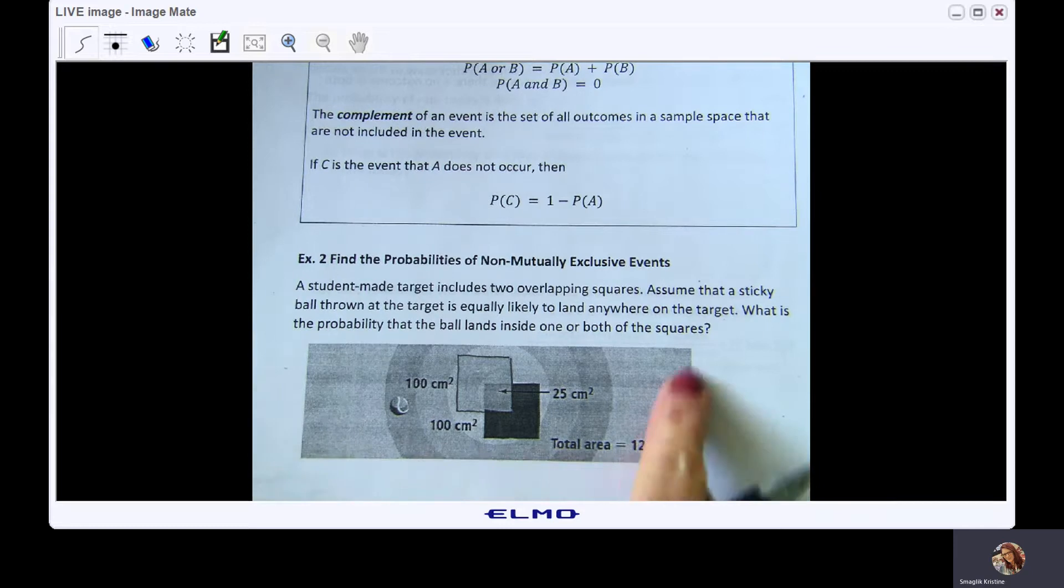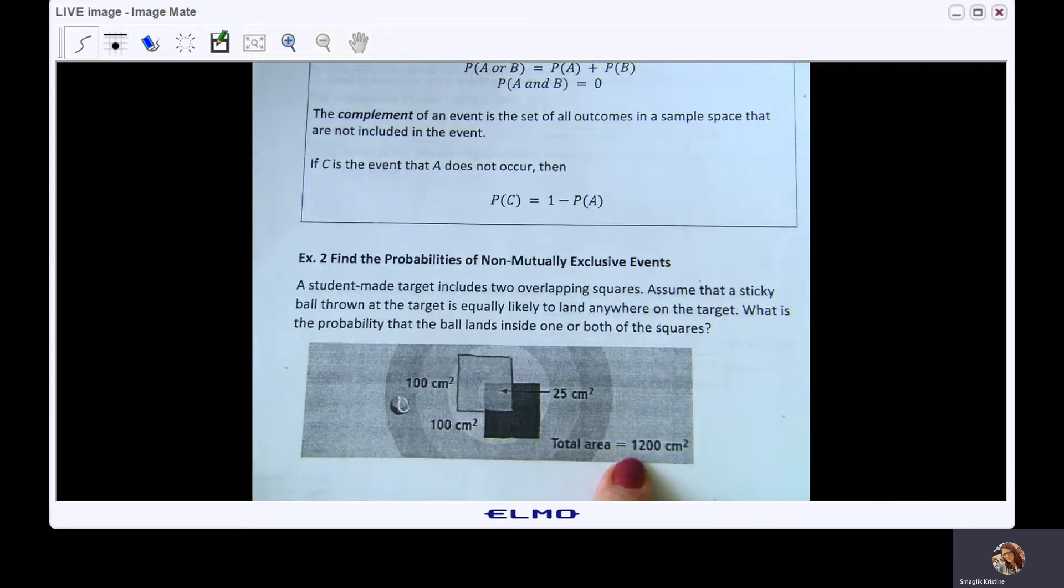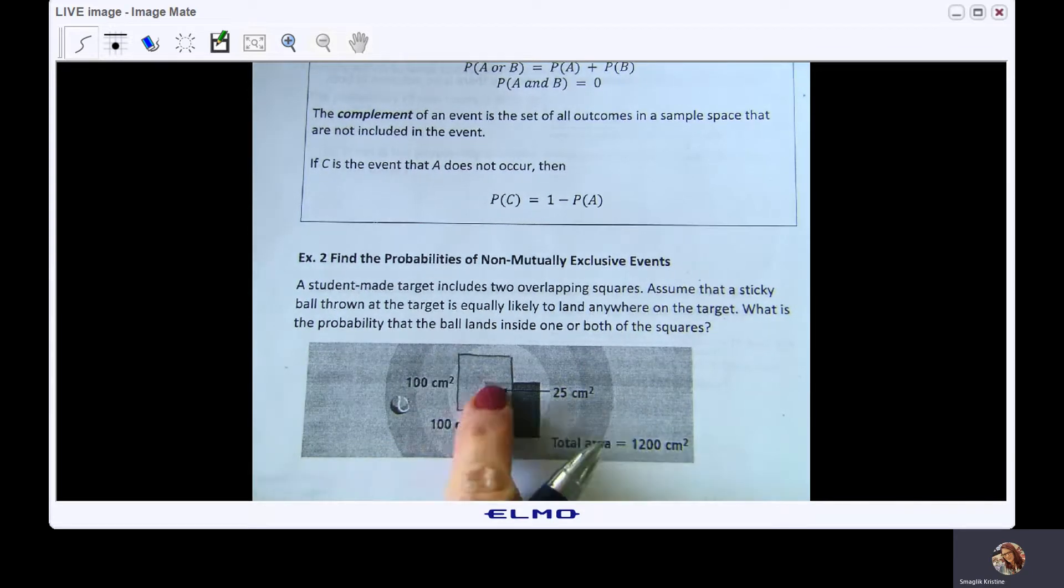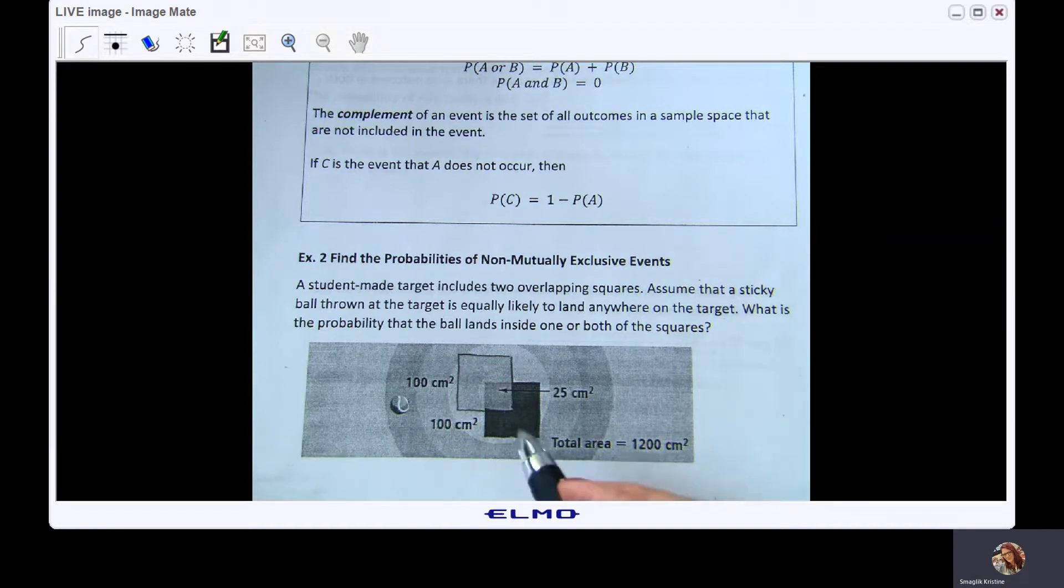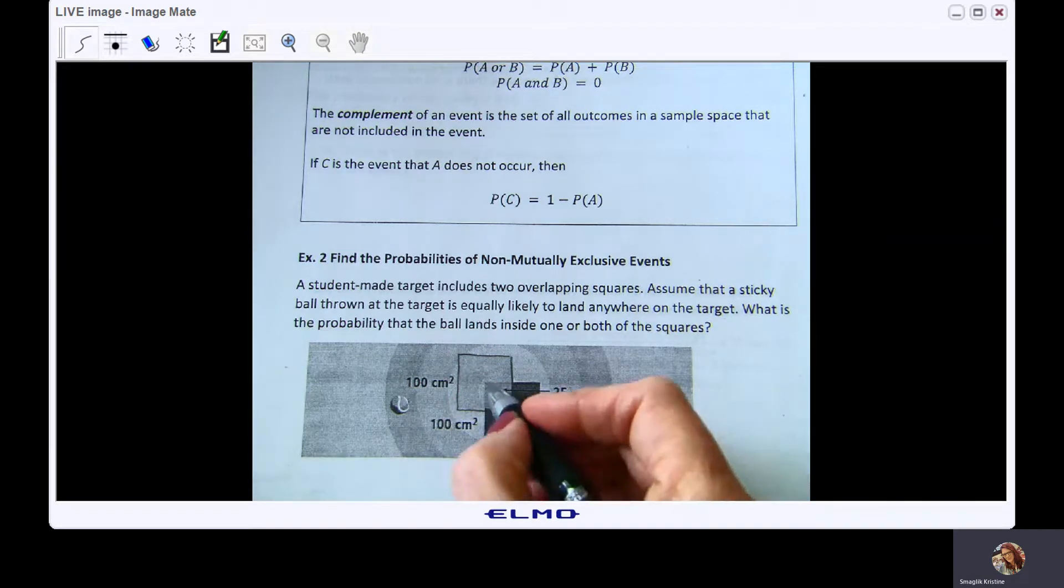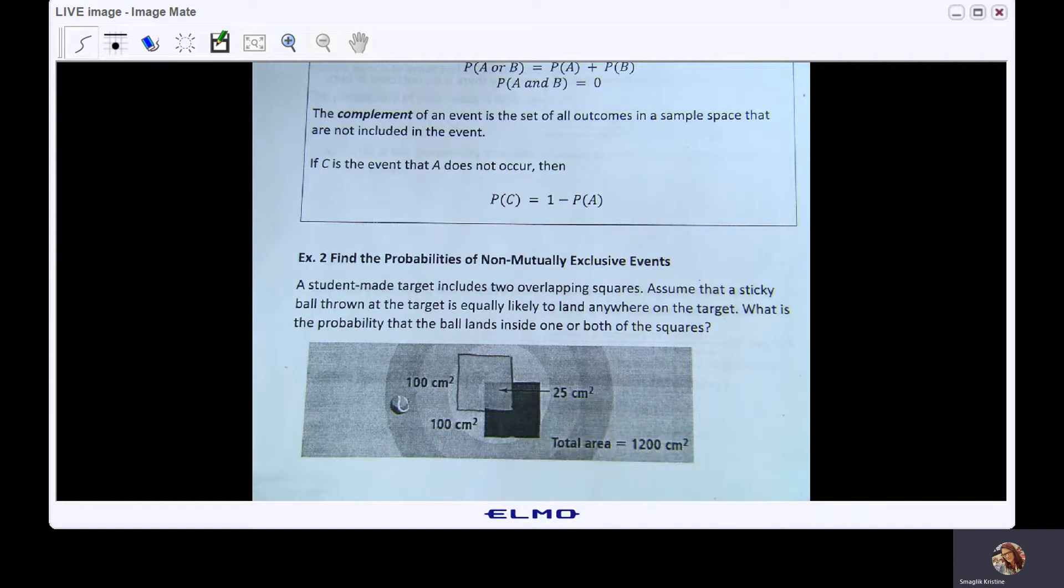So here we have total area 1200 centimeters squared. We have one square here that's 100 centimeters squared and another square here that is also 100 centimeters squared. Now notice you should be able to see on your screen this area of overlap is 25 centimeters squared. So this is where we have some shared outcomes.